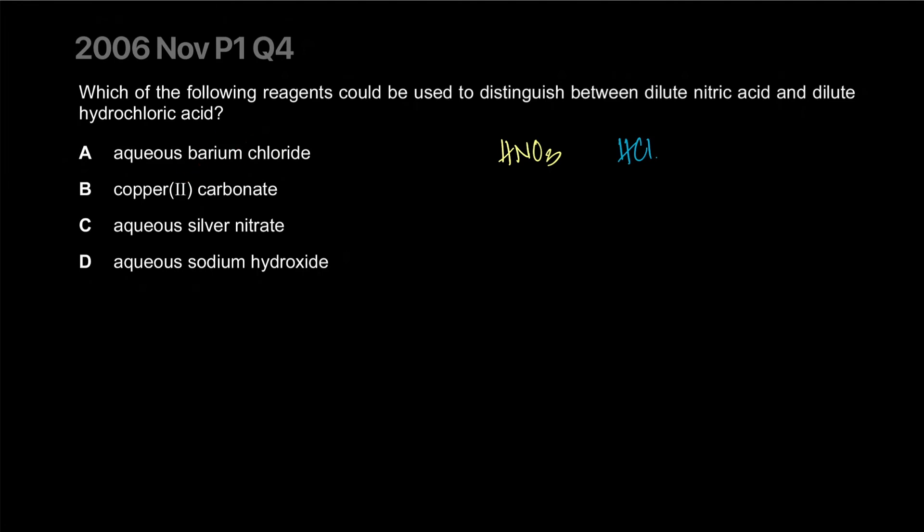Silver nitrate will test for the chloride ion. Bingo! This will test for the chloride ion and form a white precipitate, and will let us know if it's hydrochloric acid or not. No reaction would mean it's just nitric acid. Sodium hydroxide will again react with both acids. So the correct answer is C.